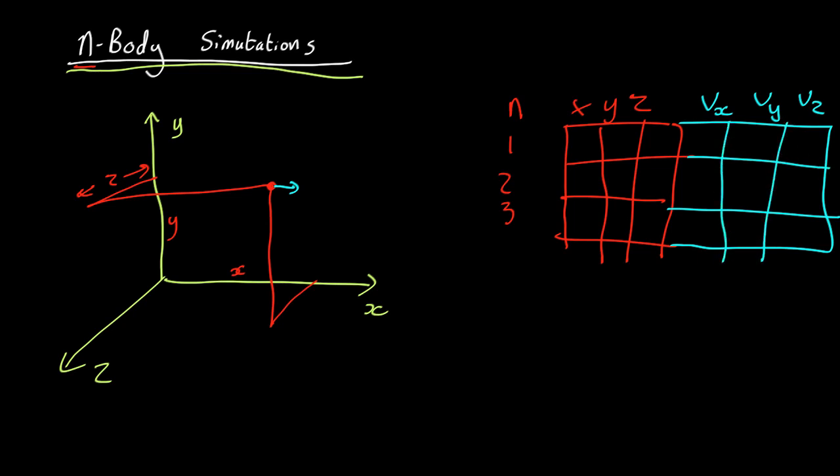So, you pick all your particles. Particle number one, particle number two, particle number three, particle number four, particle n. Where n is going to be a large number.